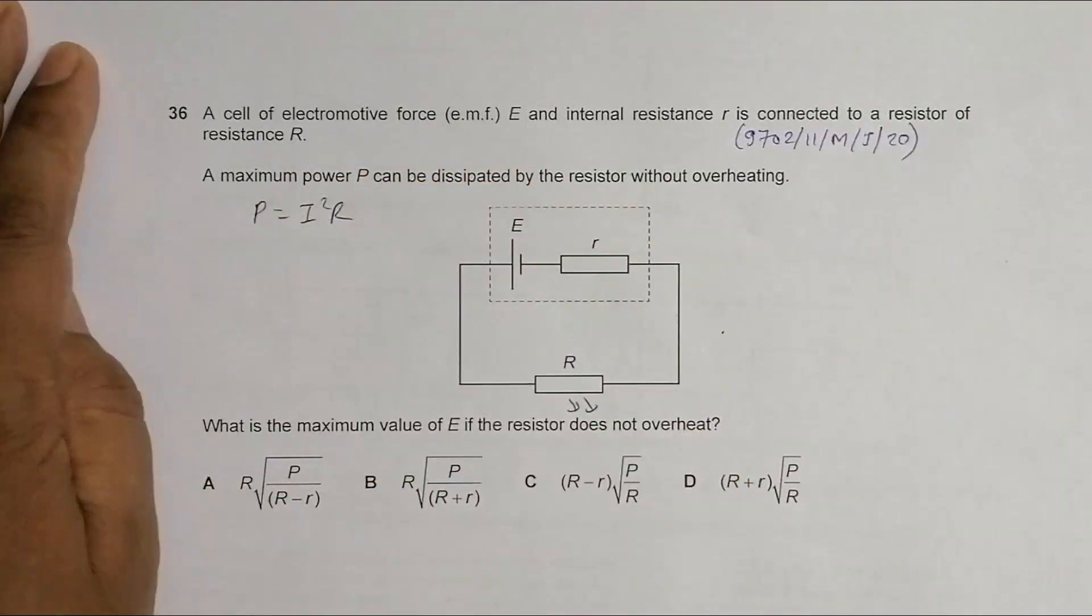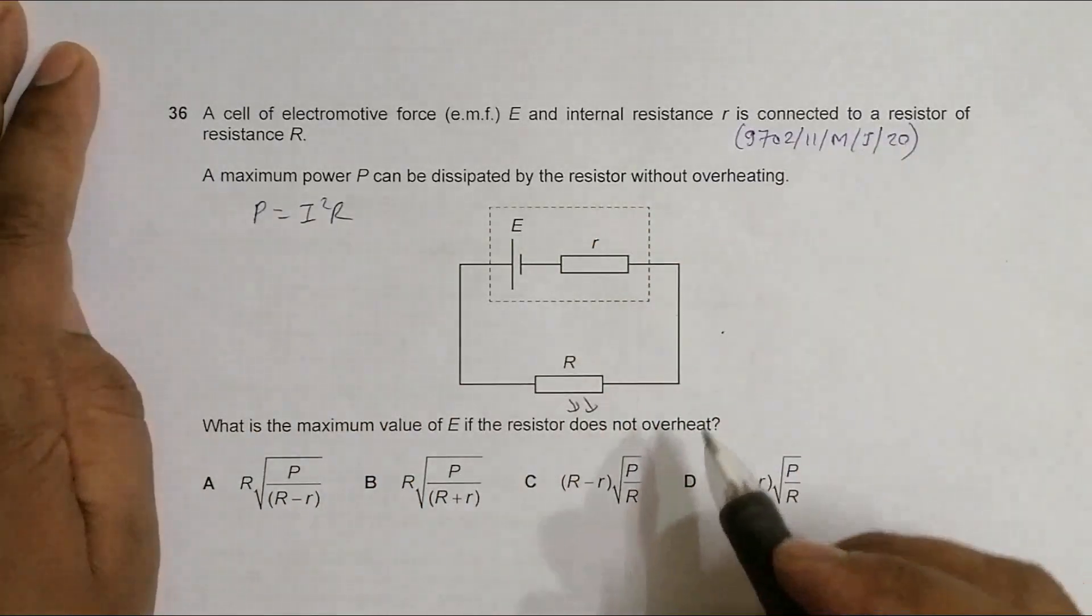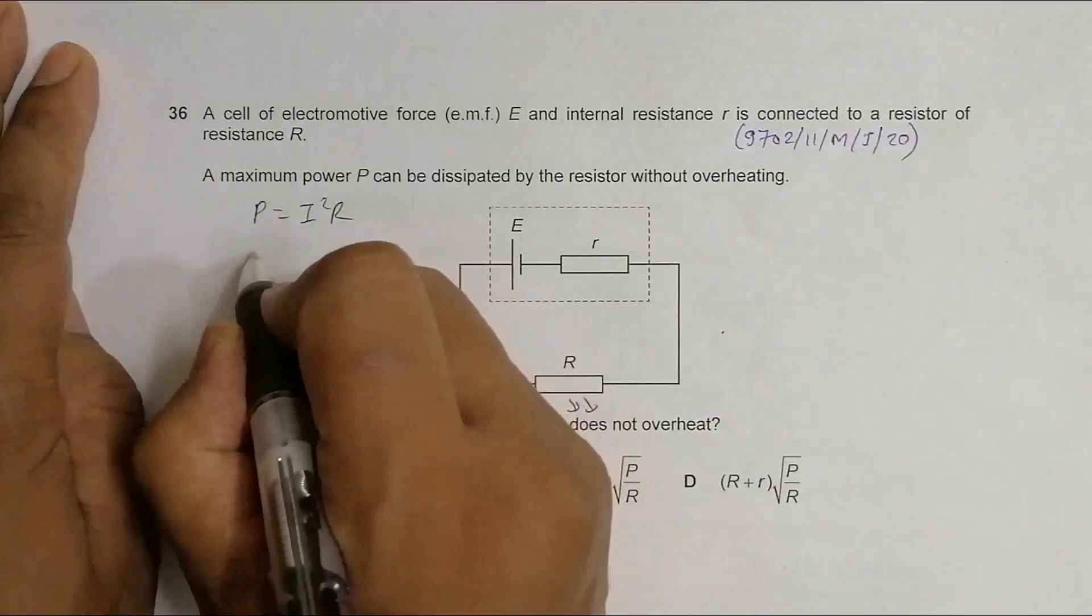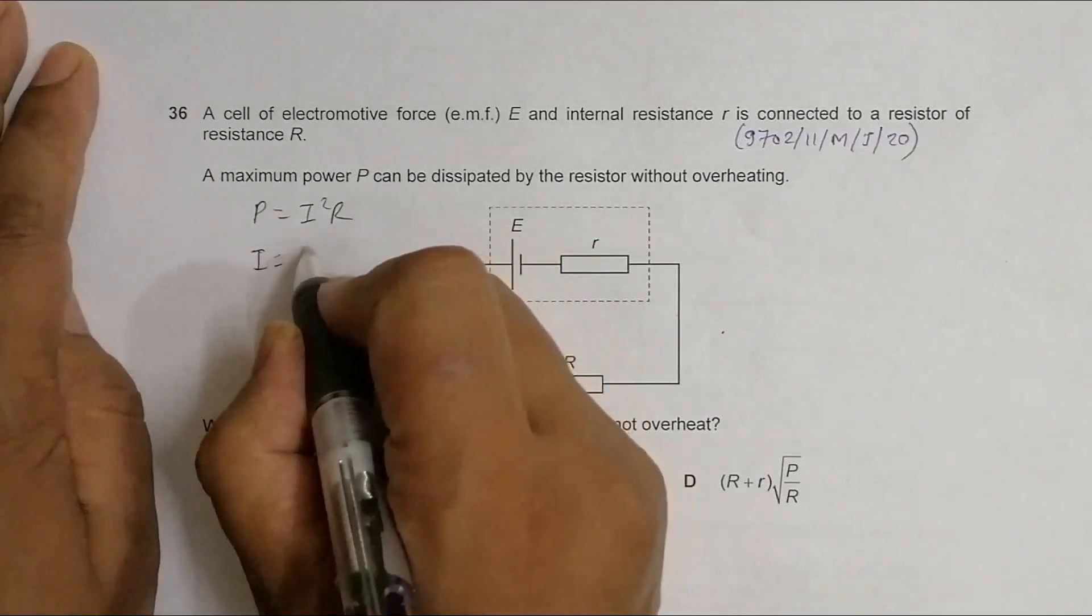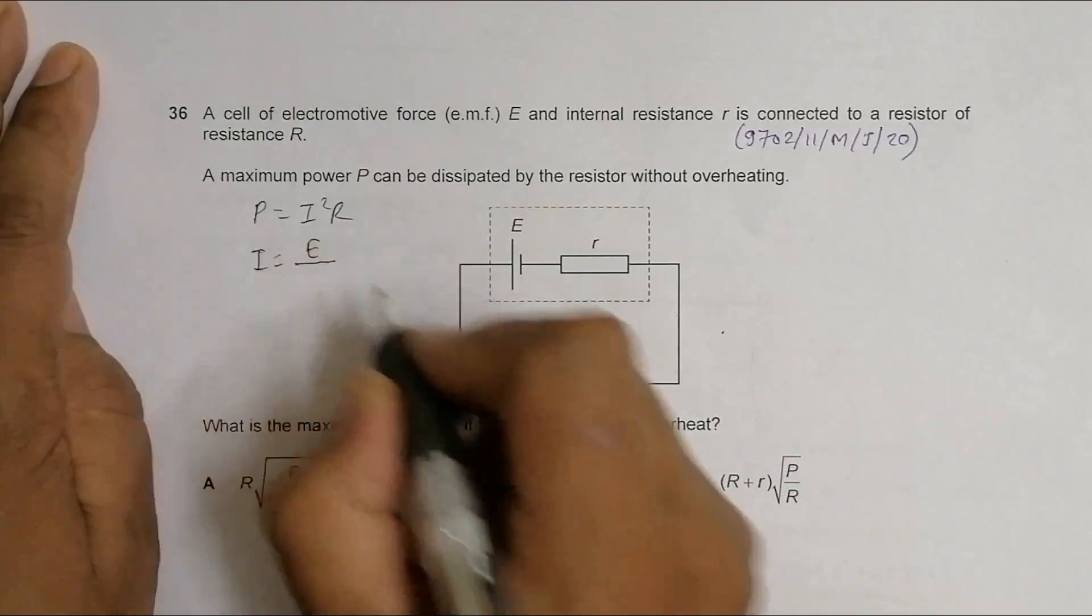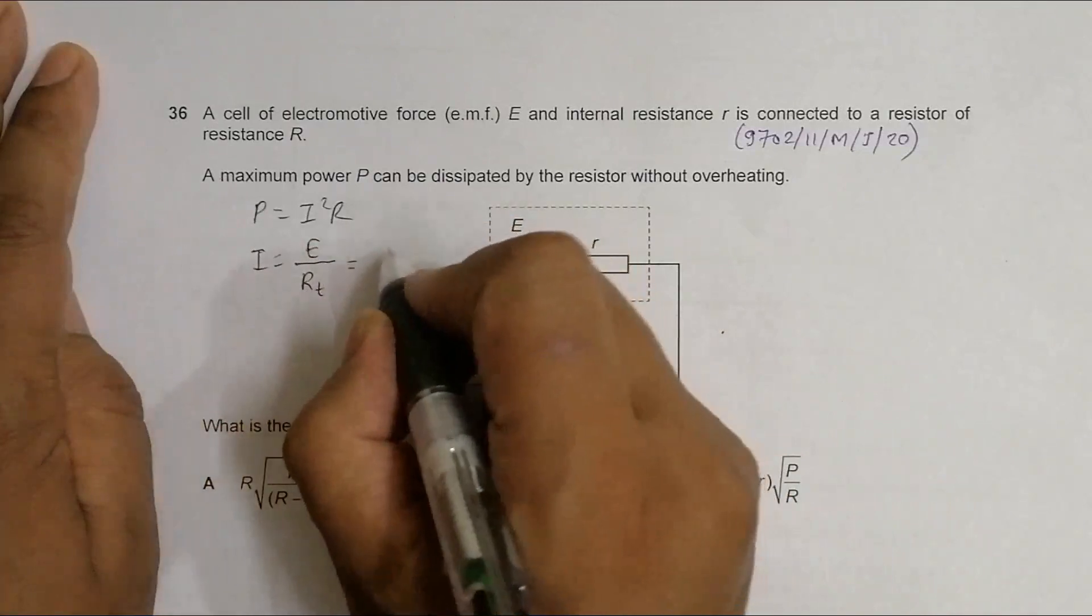The value of current I will be equal to I equals the source of EMF, which is E, divided by the total resistance. Let's say this is our total, that's equal to E divided by total R.